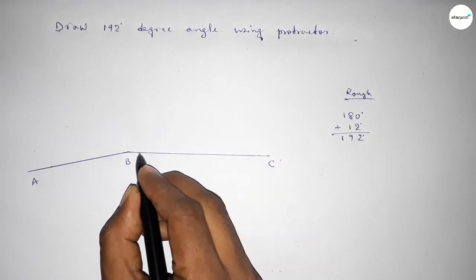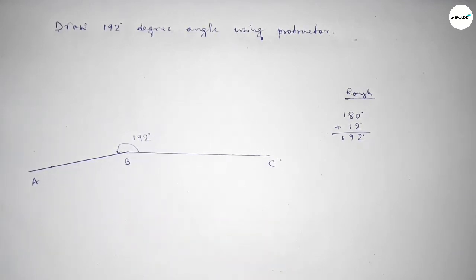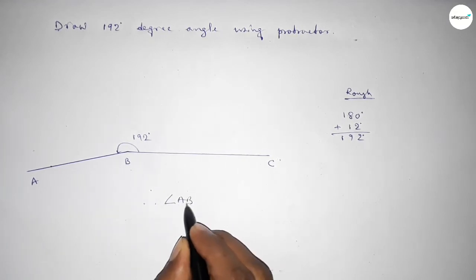So angle ABC up to this, this is 192 degree angle. So therefore angle ABC, angle ABC equal to 192 degree angle.